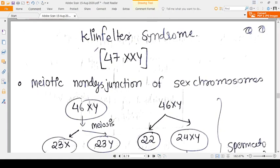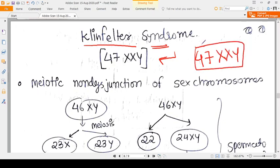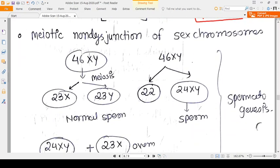Hello everyone, in this video we will talk about Klinefelter syndrome. The genetics or genotype is 47 XXY, that means we have an extra X chromosome. To understand where this extra chromosome comes from, whether from the mother or the father, we need to understand meiotic non-disjunction.